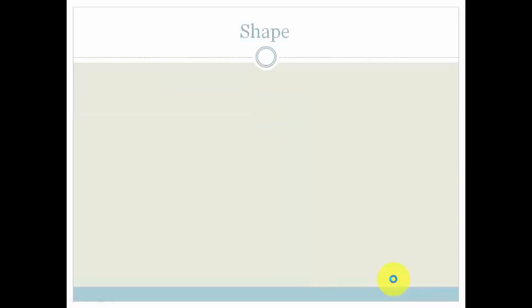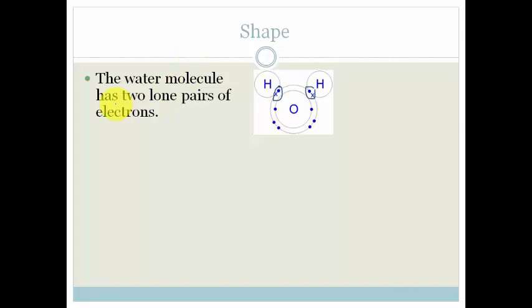So first of all, let's talk about the shape of the water molecule. As you can see here, we have a hydrogen over here and a hydrogen over here, which looks like Mickey Mouse ears. This here is a shared pair of electrons, and that is a shared pair of electrons. And you can see here, which is very important, we've got two unshared pairs of electrons. So the water molecule has two lone pairs of electrons.